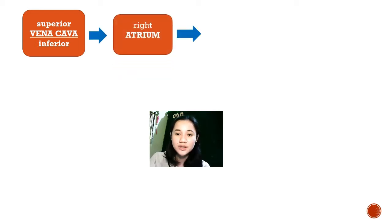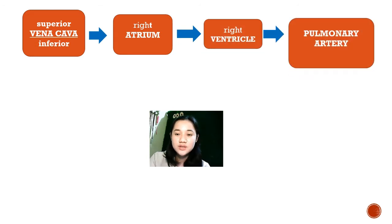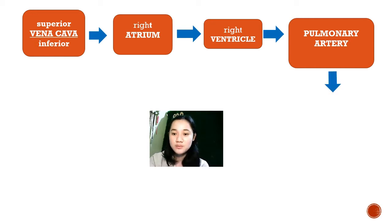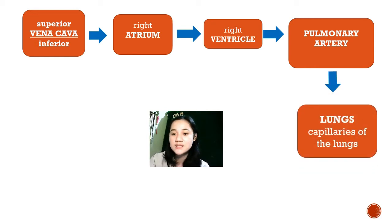Then, to the right atrium, to the right ventricle, and to the pulmonary arteries. Remember that the blood flowing through these different parts is called deoxygenated blood, which contains carbon dioxide. Since it contains carbon dioxide, it will then be moved to the lungs.